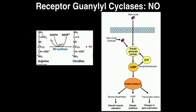Cyclic GMP activates protein kinase G — named G because it comes from cyclic GMP. Protein kinase G then activates a series of phosphorylation cascades. We can activate transcription factors, causing changes in gene expression. We can activate VASP, a protein that inhibits platelets from sticking together, preventing clotting. Or we can phosphorylate myosin light chains, leading to relaxation of smooth muscle and net dilation of the blood vessel, preventing excess constriction.